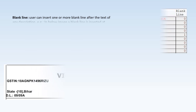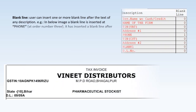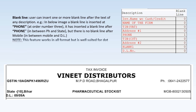Users can insert one or more blank lines after the text of any description. For example, a blank line inserted at Phone (order number three) creates a blank line after Phone — between Phone and State — but there is no blank line after Mobile, meaning no gap between Mobile and DL. Note: this feature works in all formats but is best suited for dot matrix printers.